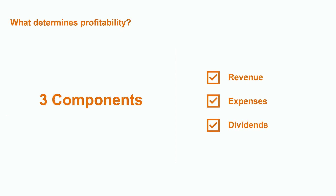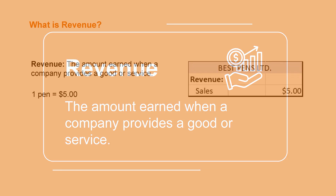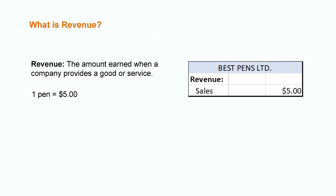Before we dig into the actual accounting process, let's first run through a brief overview of each of these items. Revenue is the amount earned when a company provides a good or service. If you were to buy a pen from me for $5, that would be $5 of revenue in my pocket. If I sell 10,000 pens over the span of a quarter, that's $50,000 of revenue for my company.